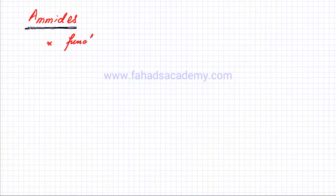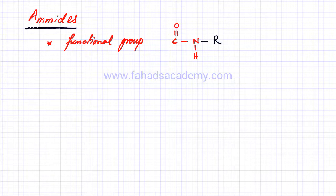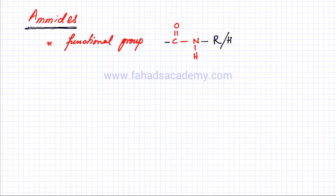The next homologous series we'll study are called amides. This is also not critically important but you need to be able to identify amides. The functional group in an amide is C double bond O attached to an N which is bonded to an H. On the right and left sides of this functional group, this N needs to make one more bond, so there will be a carbon chain — represented by R — or it could also be a hydrogen atom. Similarly, on the left hand side attached to the C double bond O there could be a carbon chain or a hydrogen atom.